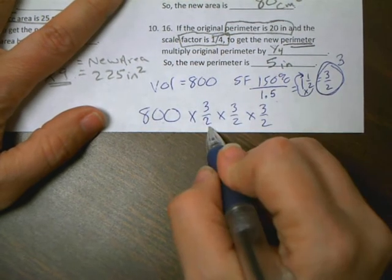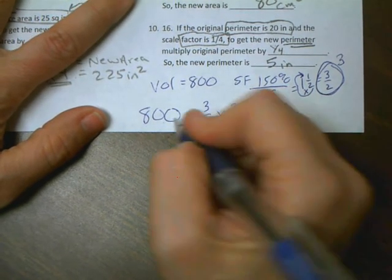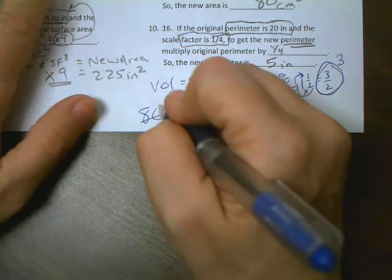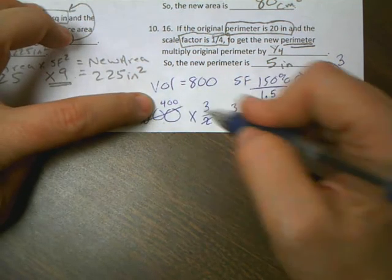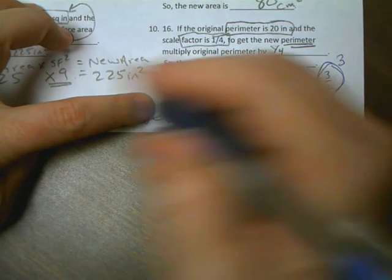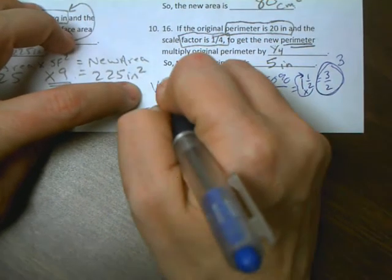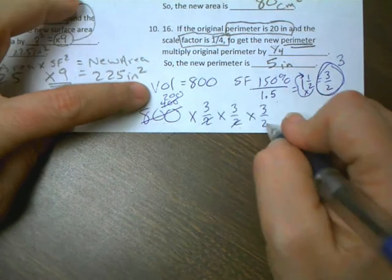What's 800 divided by 2? 400. So cross out the 800, we're thinking mentally in our brain, 400. Then what we're going to do in our brain again, 400 divided by 2 is 200. And 200 divided by 2 is 100.